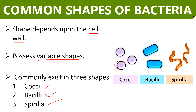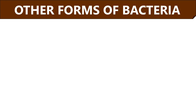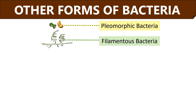Cocci look like a spherical shape, bacilli have a rod shape, and spirula have a helical or spiral shape. Besides spherical, rod, and helical shapes, bacteria also possess some different shapes which we will briefly discuss in this video along with examples. Some bacteria are pleomorphic in nature, which means they do not possess a definite shape and size.